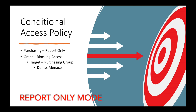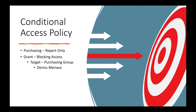We also have another conditional access policy for the purchasing group — its name is 'Purchasing' and it's in report-only mode. I wanted to show the difference between a policy that's turned on versus one in report-only mode. When we're ready to fully enforce it, we'll set the grant section to block access. The targeted group is the purchasing group, and Dennis Menace is who we're going to block — because he is just doing too much.